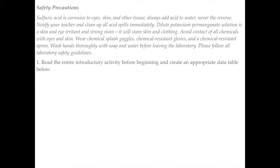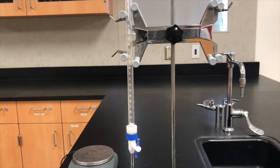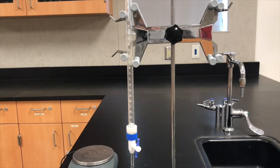First, read the entire introductory activity and create a data table. I'm going to take you through the steps for the first activity — determining the concentration of potassium permanganate — and then you will do it in the lab. For your second titration, you'll do that in the lab as well, but it's very similar to this first titration.